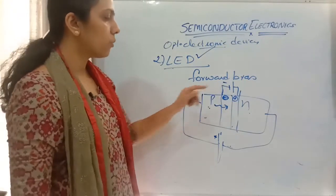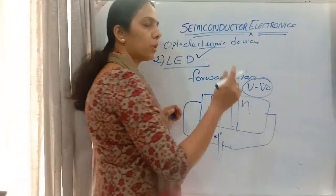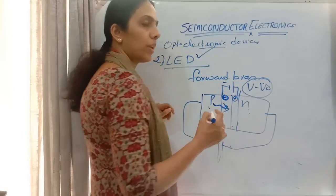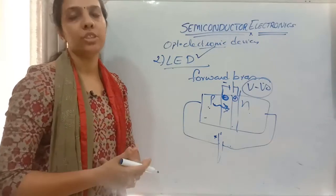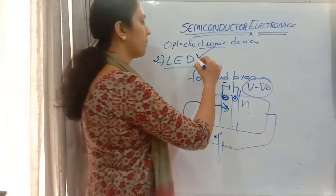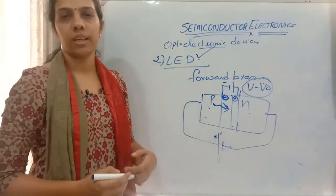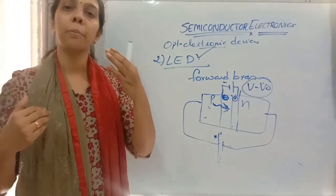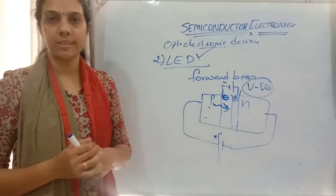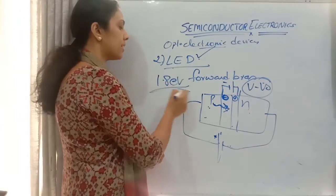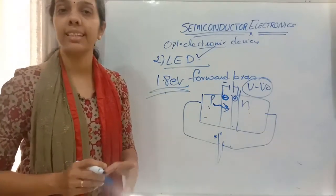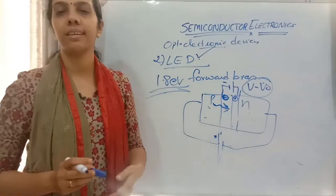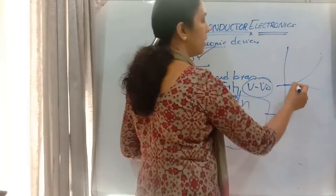The applied voltage reduces the barrier potential (V minus V₀). When holes and electrons recombine, photons are generated and light is emitted — that is how an LED works. LEDs are available in different colors. For an LED to work properly, a minimum band gap of 1.8 electron volt is required. The characteristic curve of an LED is the same as the forward bias characteristic of a PN junction diode. The photodiode characteristic is in the reverse bias region, plotted in microamps, with curves I₁ < I₂ < I₃ for increasing illumination.